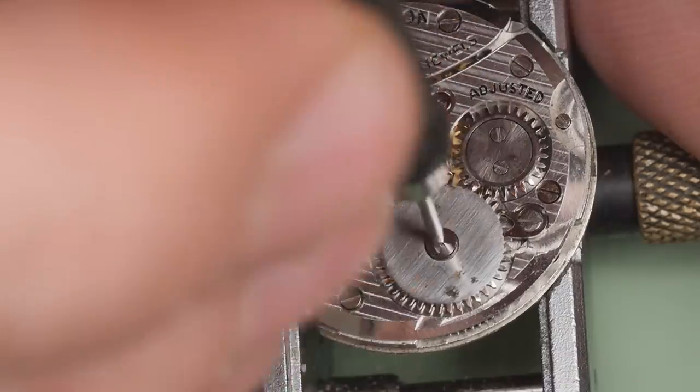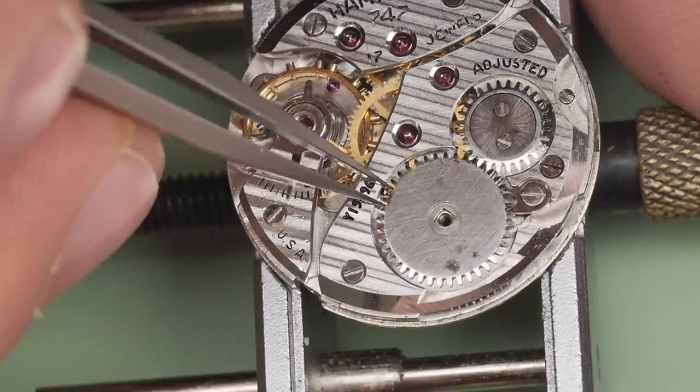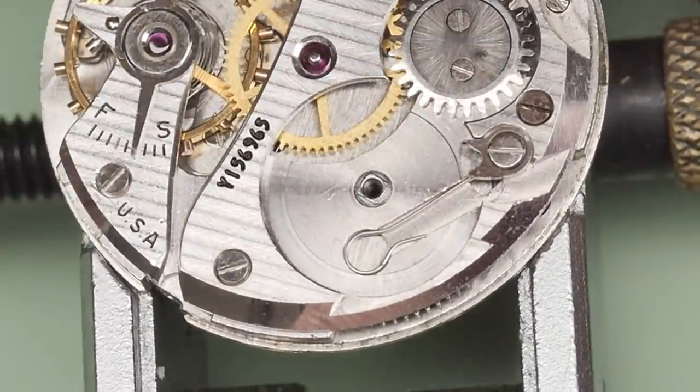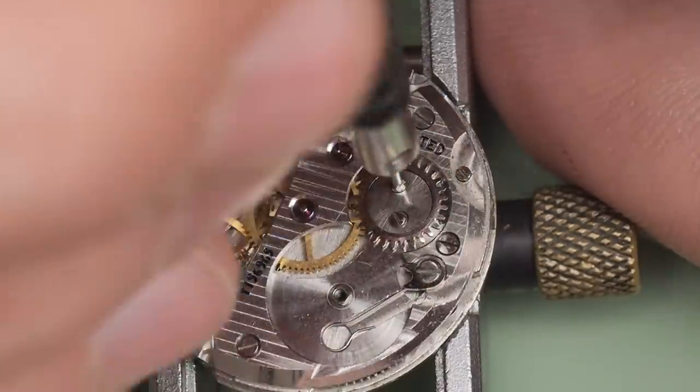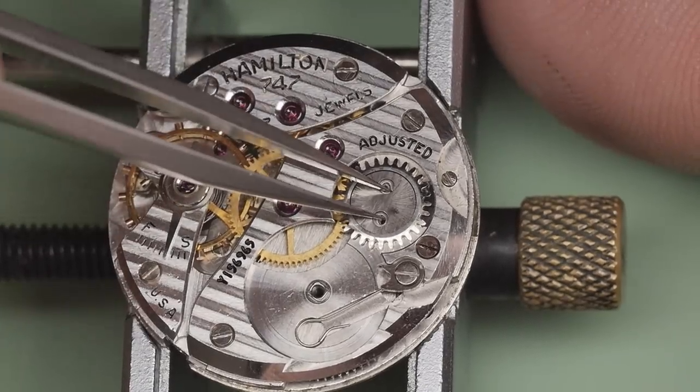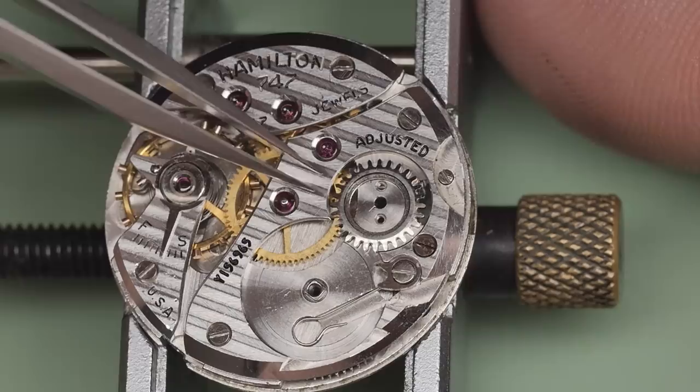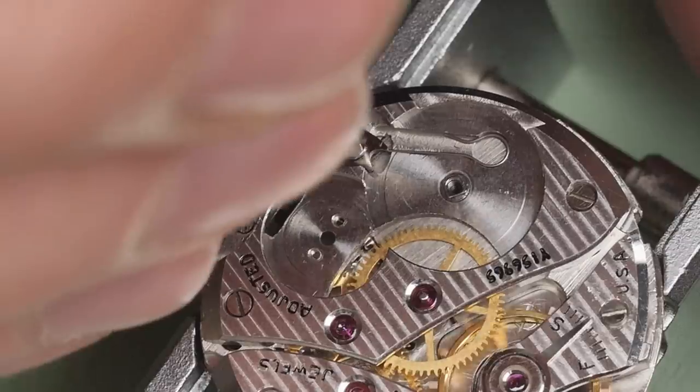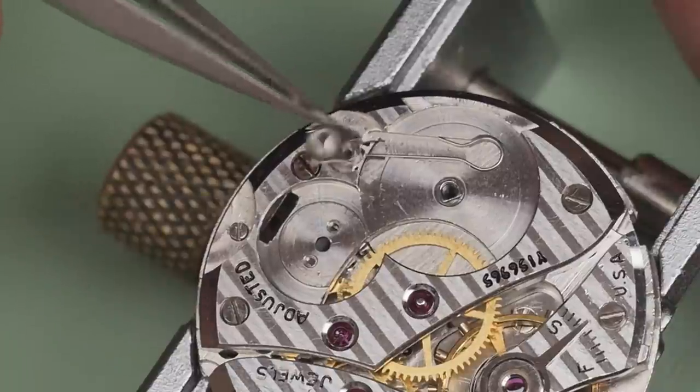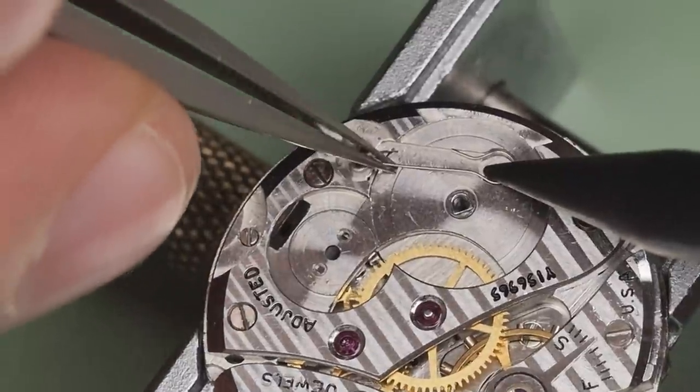I tighten up the dial feet screws again before I forget. With the mainspring completely let down, I remove the ratchet wheel screw and the ratchet wheel. I call this technique the wolf reverse tweeze. Now I can remove the crown wheel hub, also called the winding wheel hub in the Hamilton parts catalog from 1949. Again using the world famous wolf reverse tweeze. The crown wheel comes out using the regular old tweezing technique. The click screw, click and click spring are straightforward to remove.